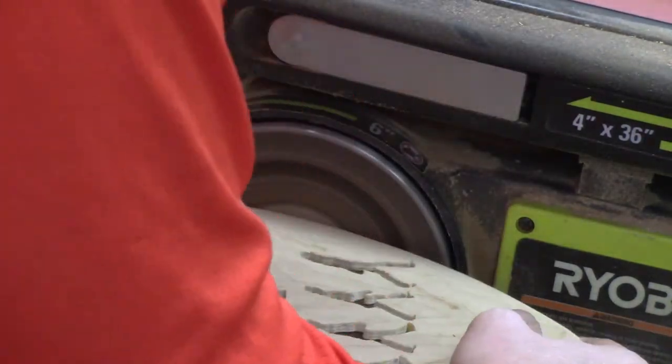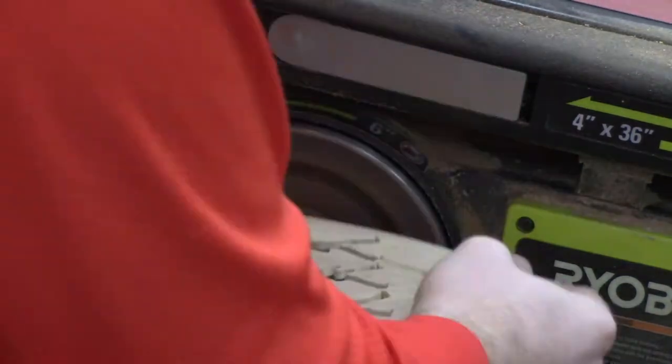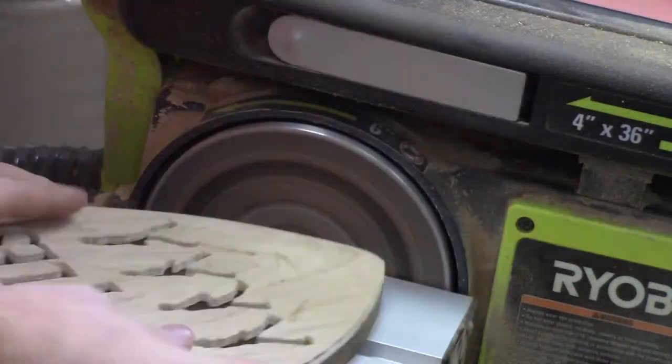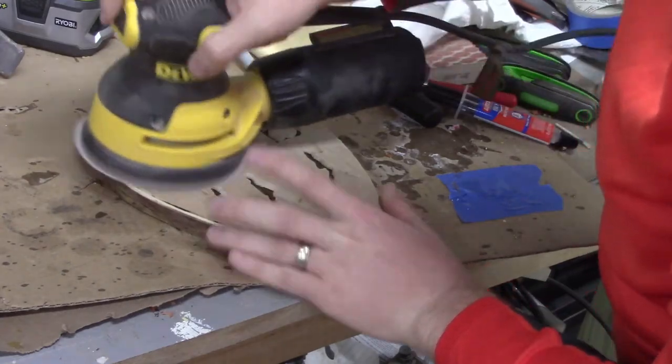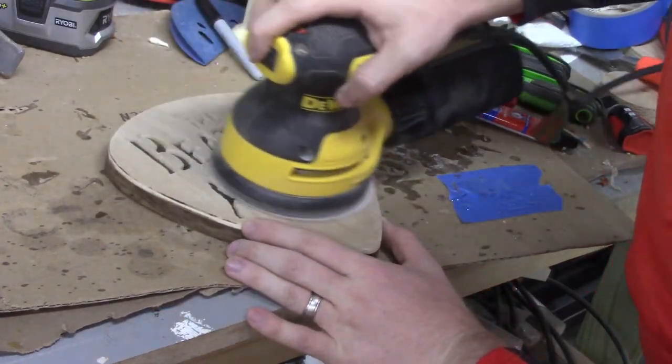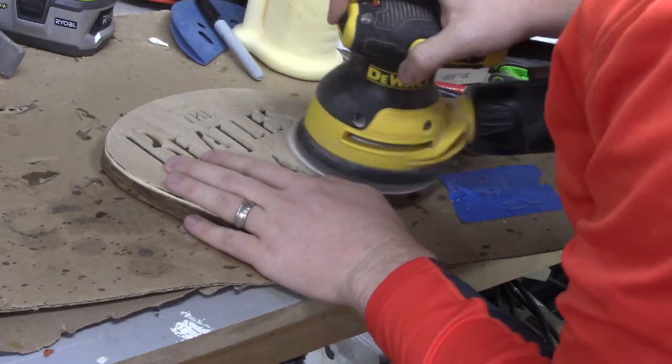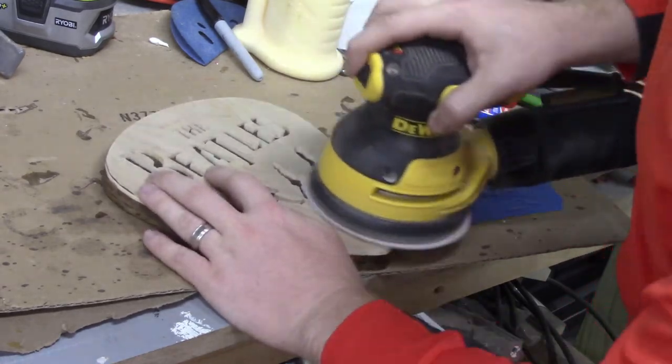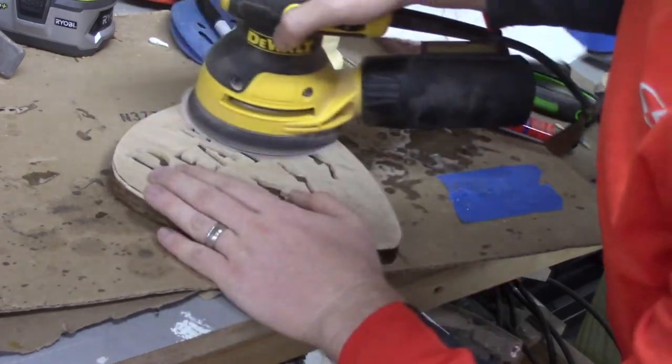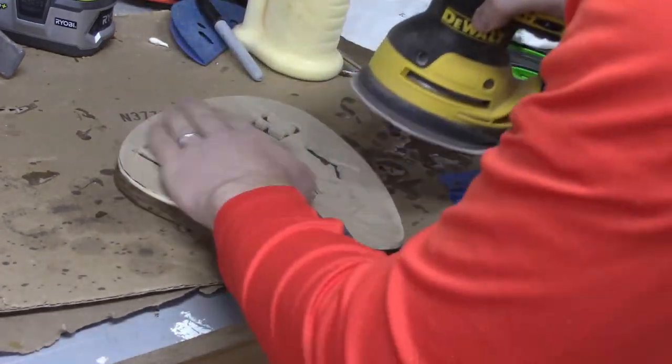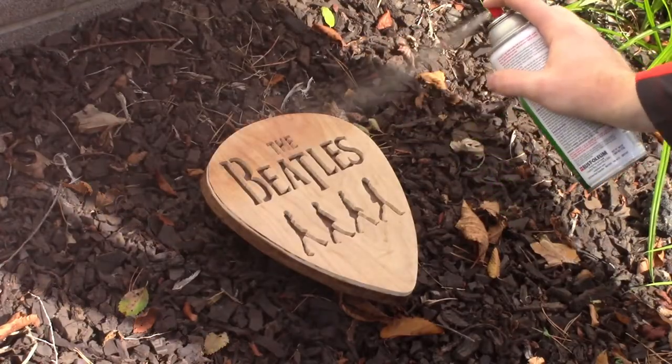If you guys know how to replace one of those Ryobi discs, let me know in the comments. Here I am sanding with 120 grit the top of the Beatles pick. I noticed the clamps left a little residue or some kind of mark, so I'm just sanding those off real quick.